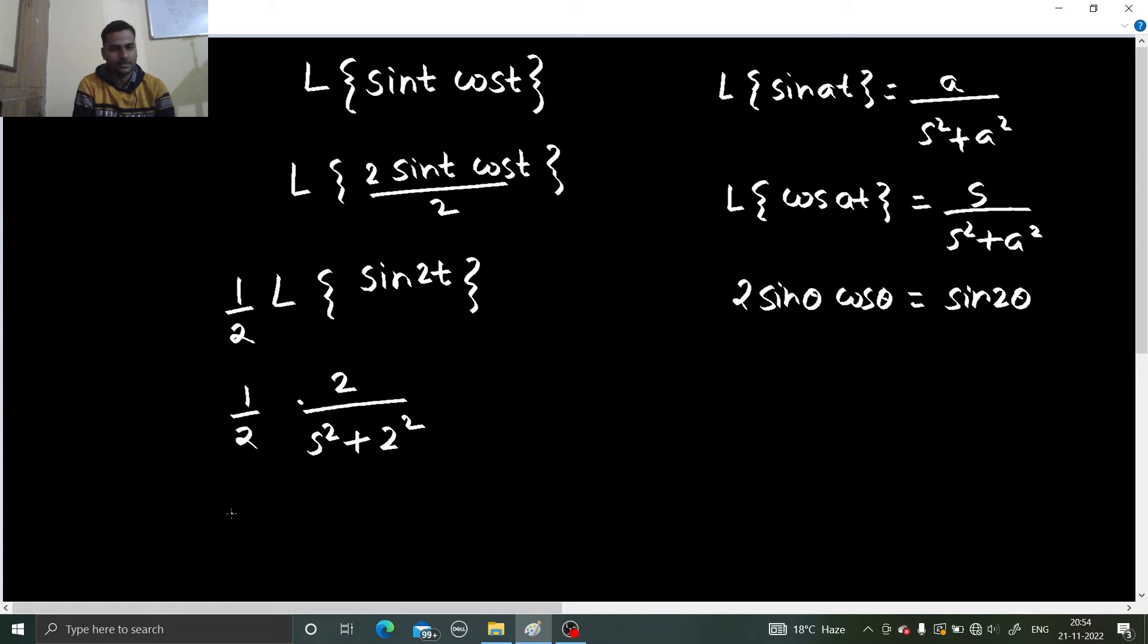This gets cancelled, so 1 divided by s square plus 4. So Laplace of sin t cos t you got as 1 divided by s square plus 4.